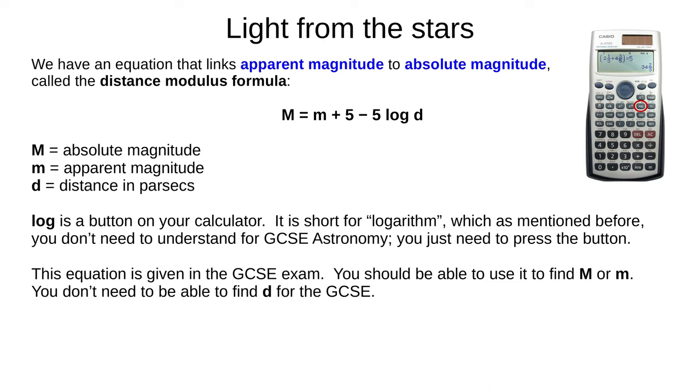We have an equation called the distance modulus formula that links apparent magnitude, absolute magnitude and distance. Big M equals little m plus 5 minus 5 times log d, where big M is absolute magnitude, little m is apparent magnitude and d is distance, measured in parsecs. Log is short for logarithm. If you understand this, great, but for GCSE astronomy, it's just a button on your calculator. This equation is given at the front of the GCSE exam paper. You should be able to use it to find absolute or apparent magnitude, but you don't need to find distance for the GCSE.